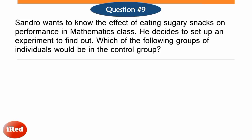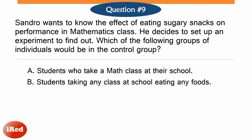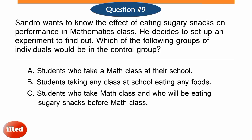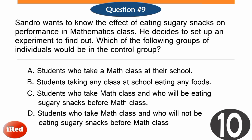Number 9. Sandro wants to know the effects of eating sugary snacks on performance in mathematics class. He decides to set up an experiment. Which of the following groups of individuals would be in the control group? Letter A, students who take a math class at their school. Letter B, students taking any class at school eating any foods. Letter C, students who take math class and who will be eating sugary snacks before math class. Letter D, students who take math class and who will not be eating sugary snacks before math class.